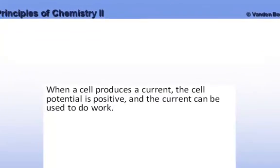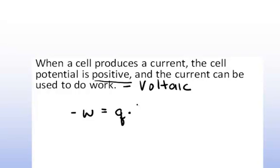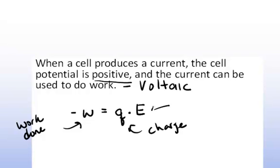When the cell produces a current, the cell potential is positive and the current can be used to do work. We see this occurring in what we call the voltaic or galvanic cell. When the potential is positive, the current can be used to do work. We define work done by the system as negative work, so negative work equals q, the charge carried, times E, the potential. The work done by the cell is equal to the charge carried by that cell times the potential of that cell.